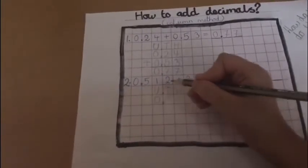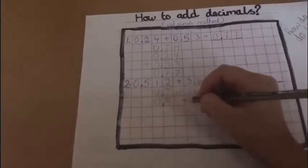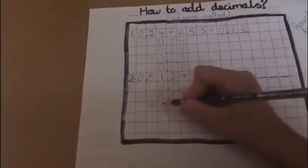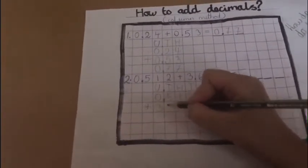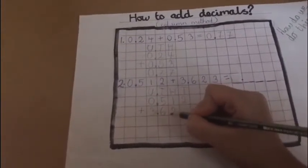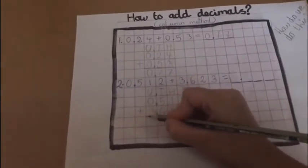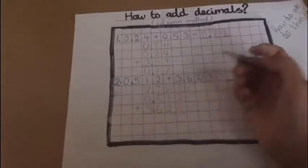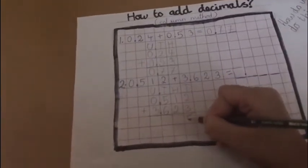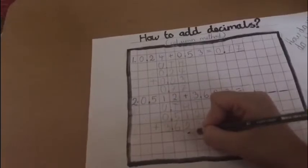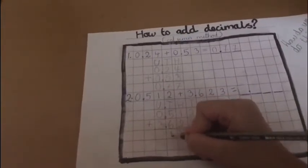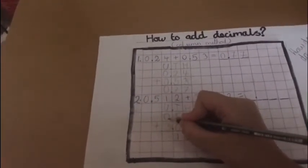0.512 plus 3.623. Now, 3 plus 2 is 5. 2 plus 1 is 3. 5 plus 6 is 11, and 0 plus 3...